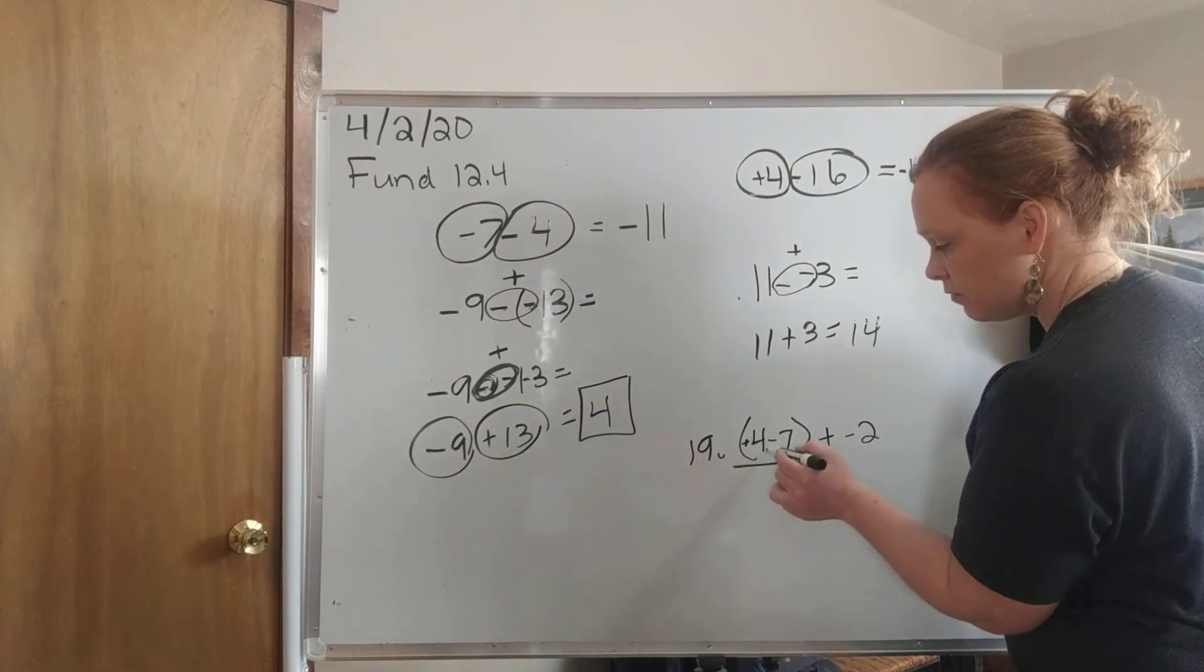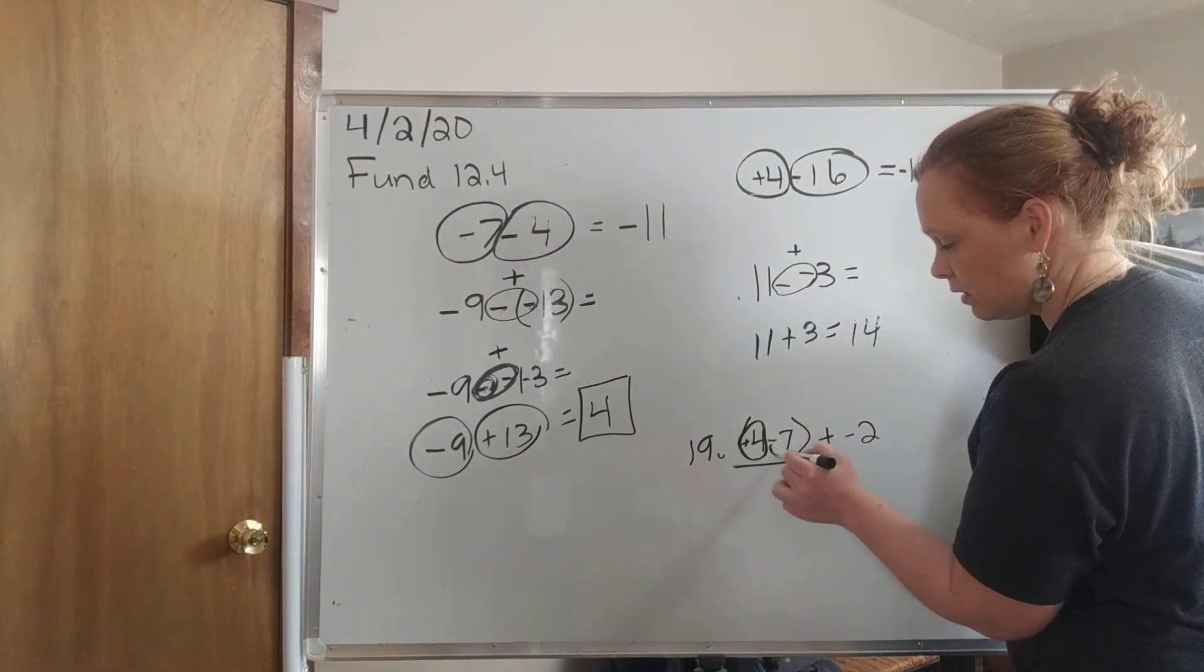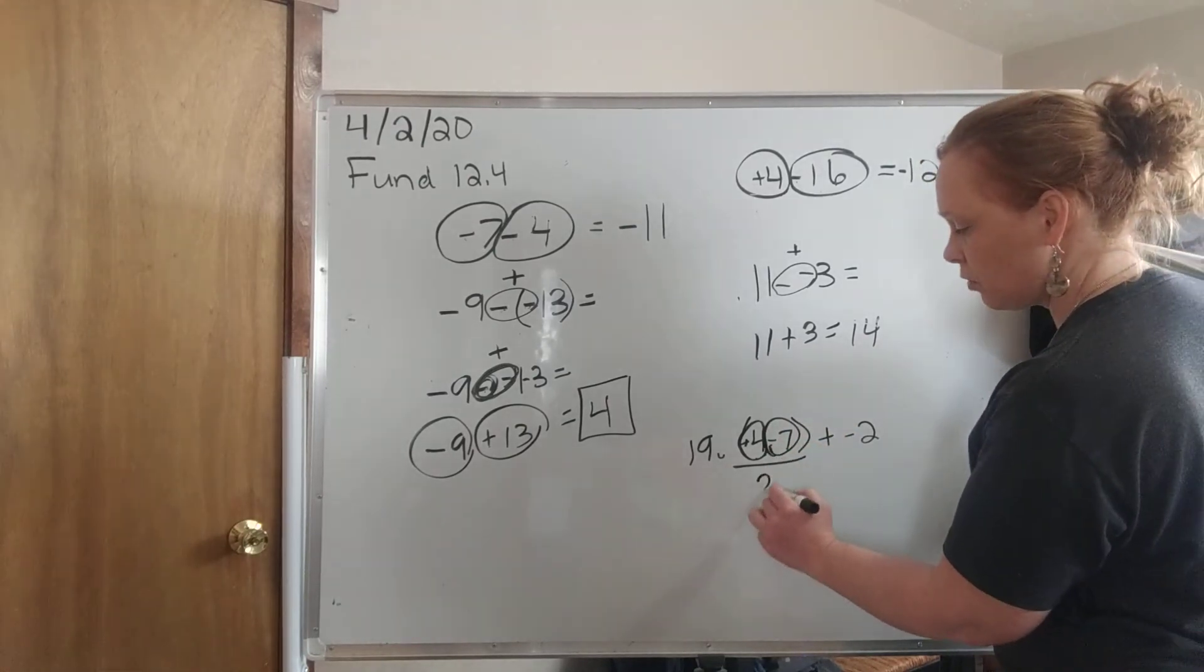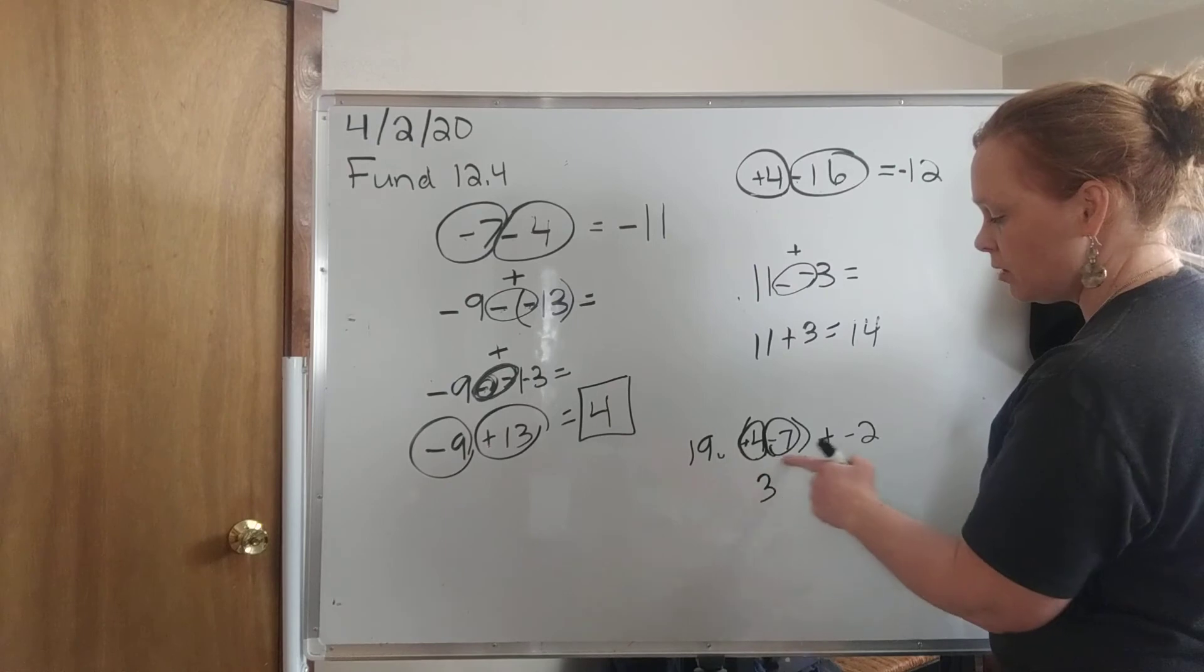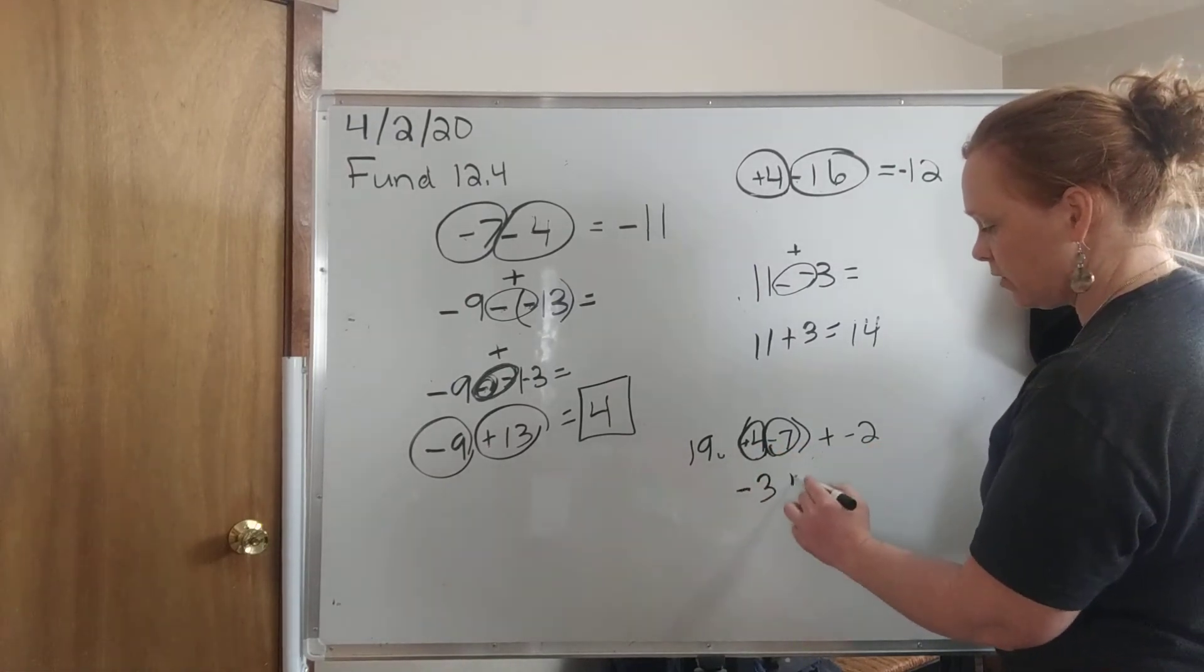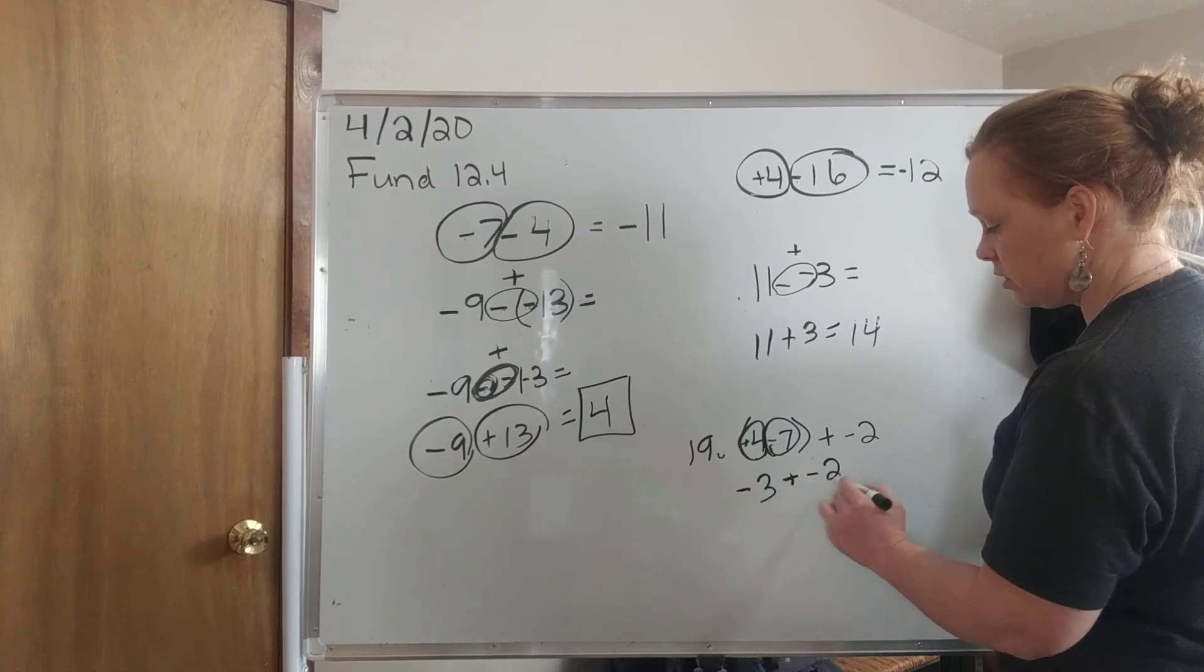We want to do 4 minus 7. So I'm going to put my little positive 4 and I'm going to circle it. So 7 minus 4 is 3. And I'm going to keep the sign of the bigger number. So negative 3. And then I'm going to bring the rest of this down. Plus negative 2.